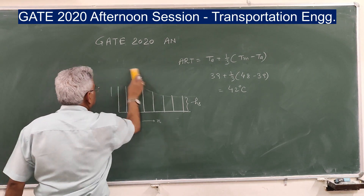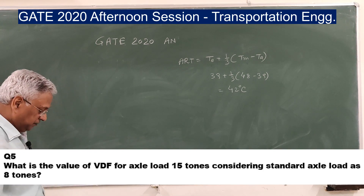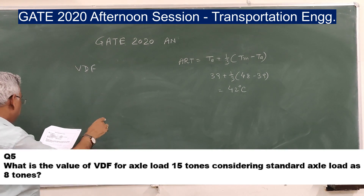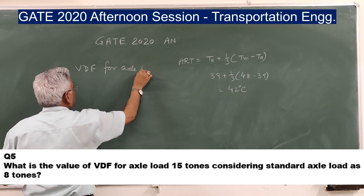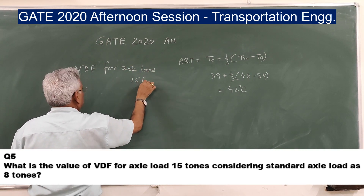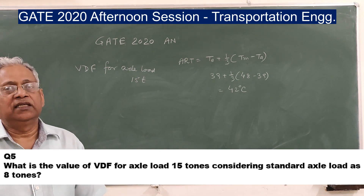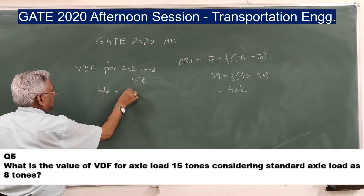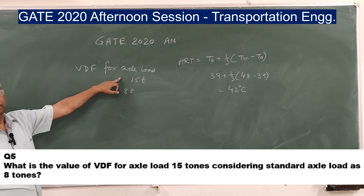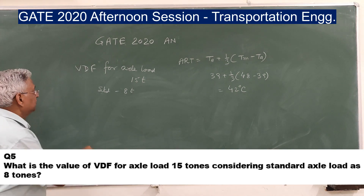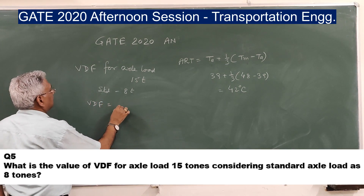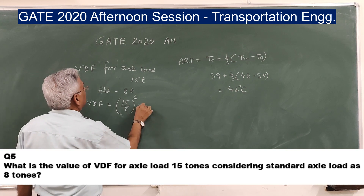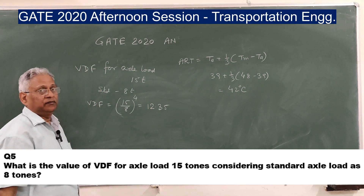Question number five: what is the VDF (Vehicle Damage Factor) for an axle load of 15 tonnes when the standard axle load is 8 tonnes? The standard axle load is 8 tonnes and the actual axle load is 15 tonnes. Vehicle Damage Factor is estimated using the 4th power law: VDF = (15/8)⁴ = 12.35. So the vehicle damage factor is 12.35.